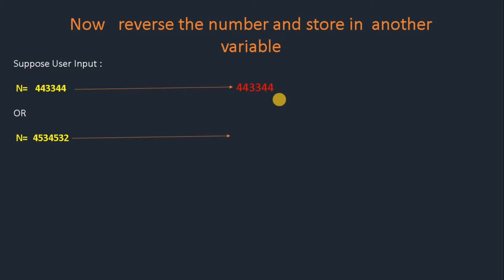So this is a palindrome. In another case, we take a non-palindrome number as well. For example, n = 4534532 reverses to 2354354, which is not a palindrome.